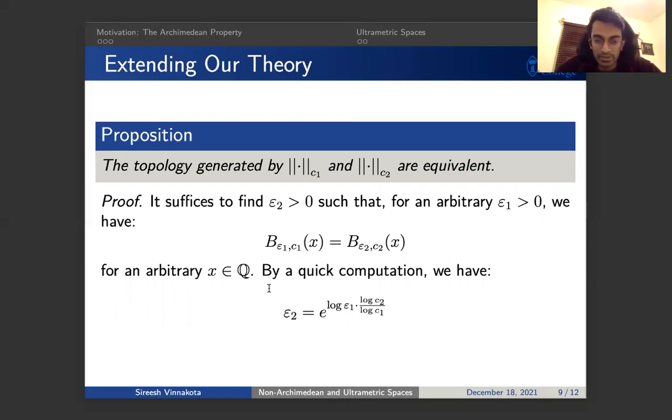So yeah, you can get epsilon 2 as a function of epsilon 1. And yeah, that sort of gives us the fact that the two topologies are indeed equivalent.